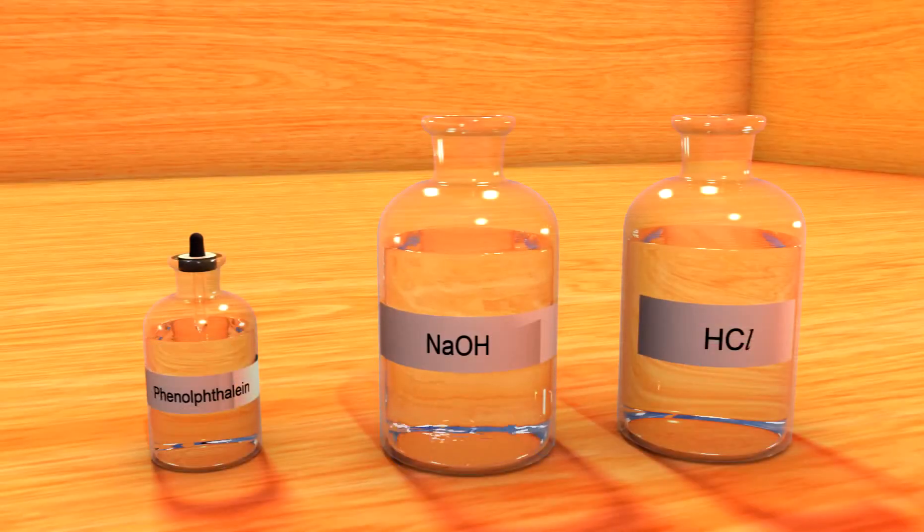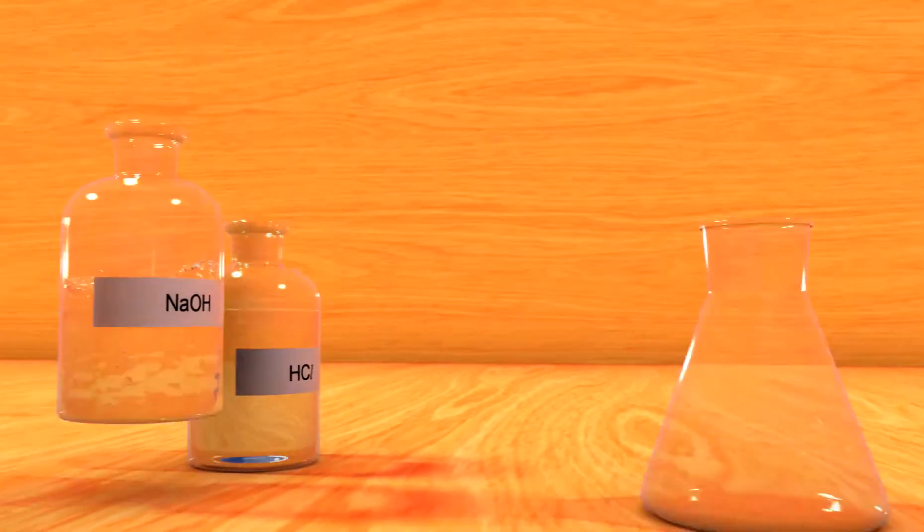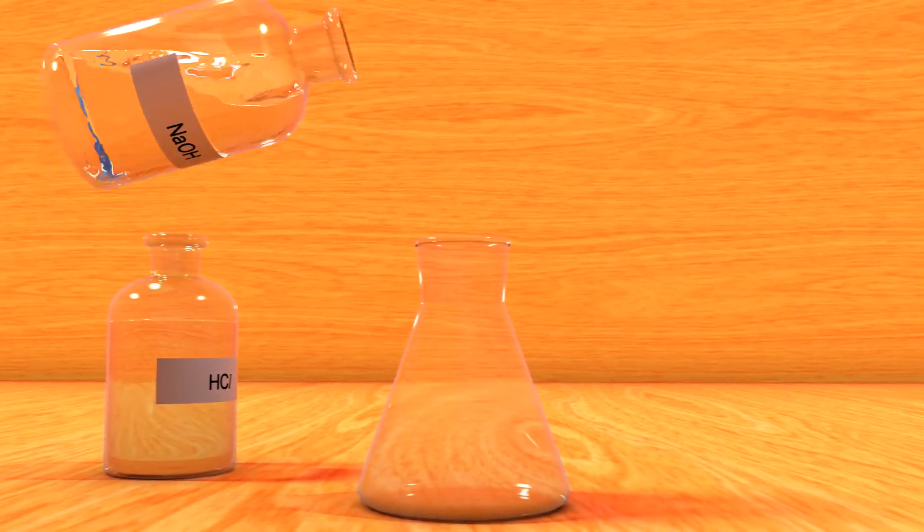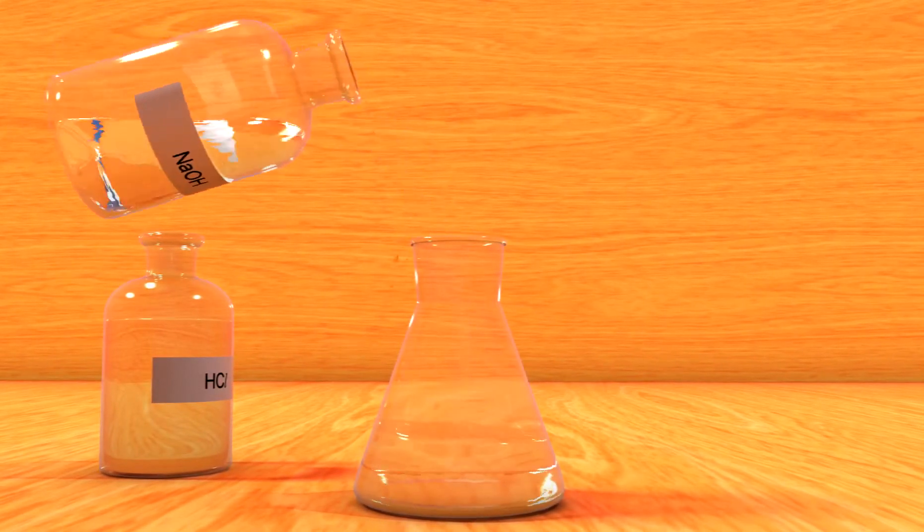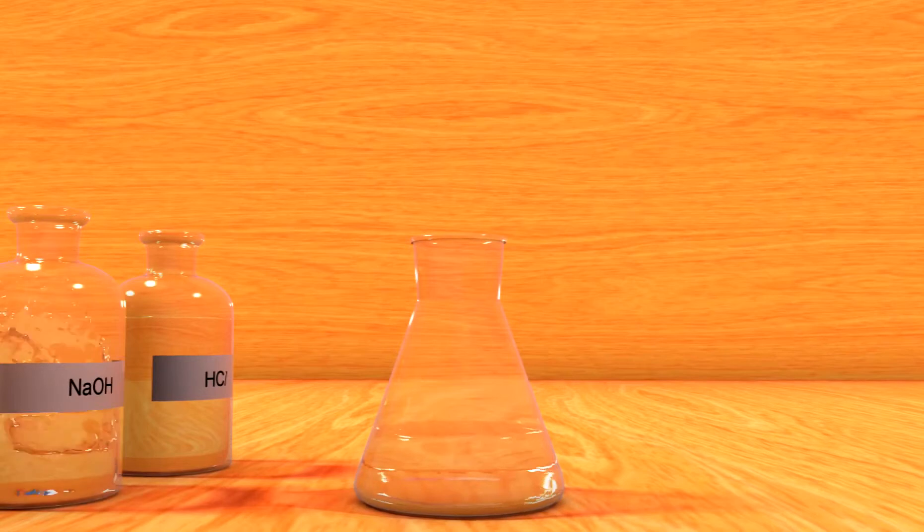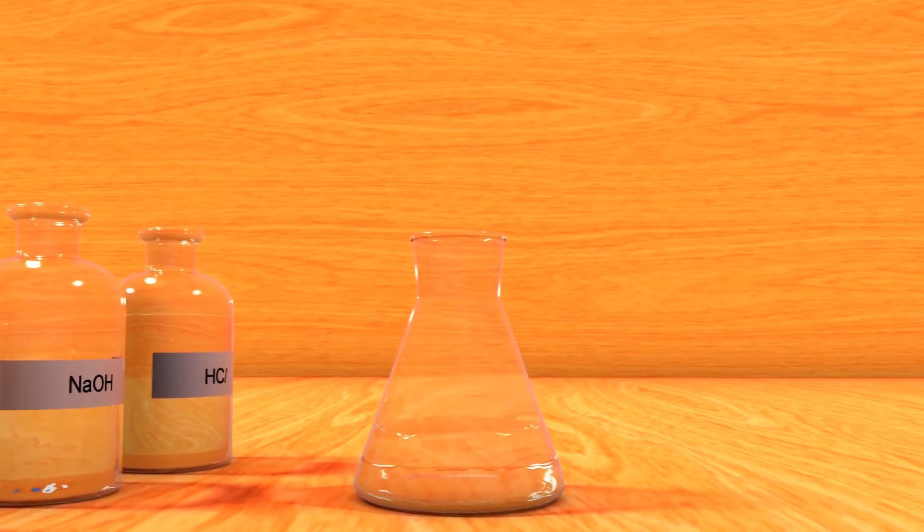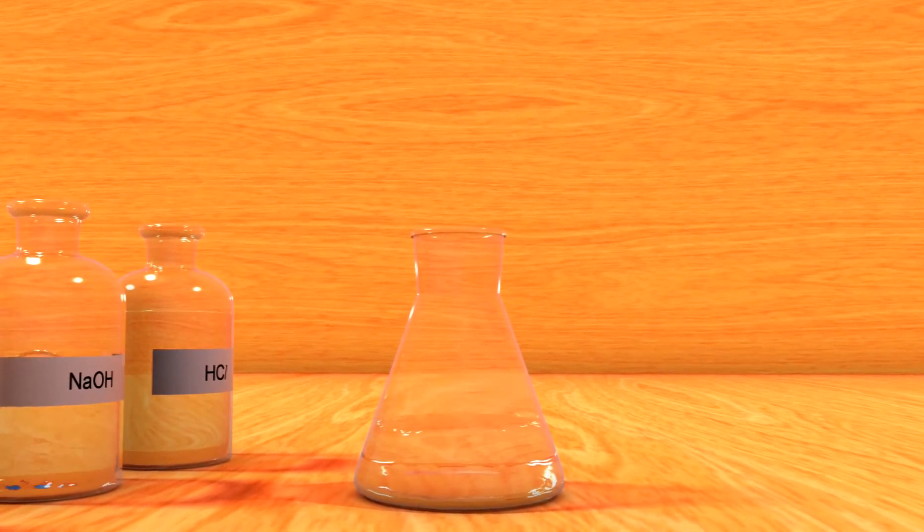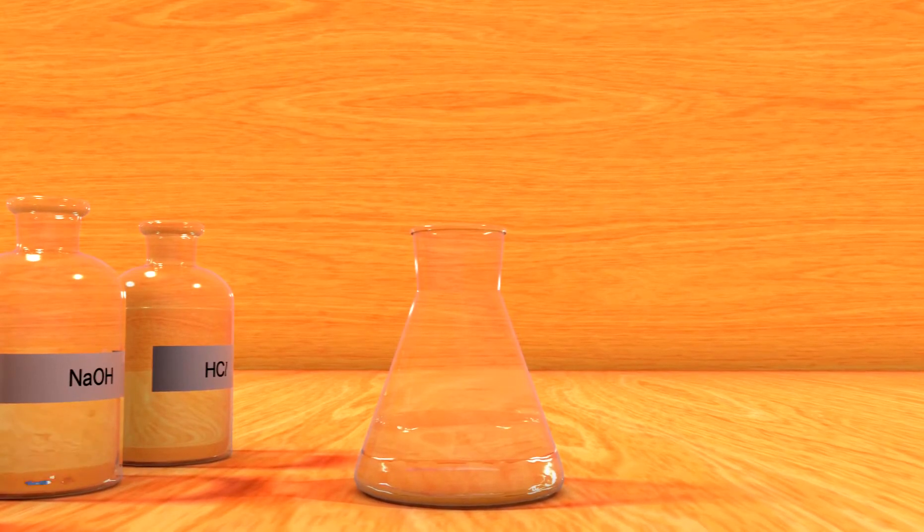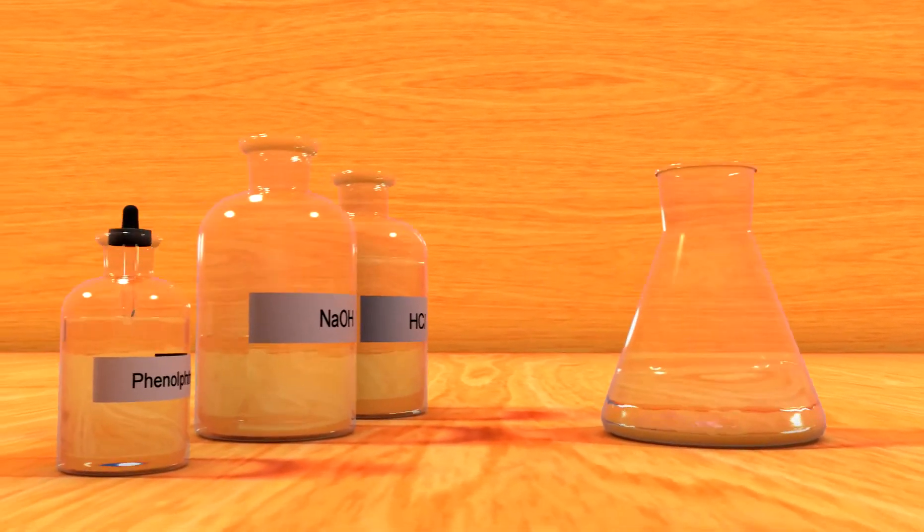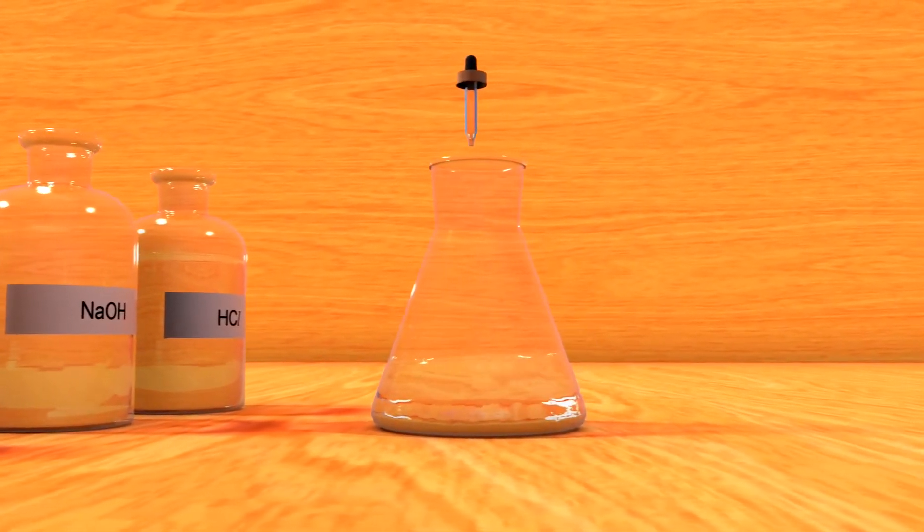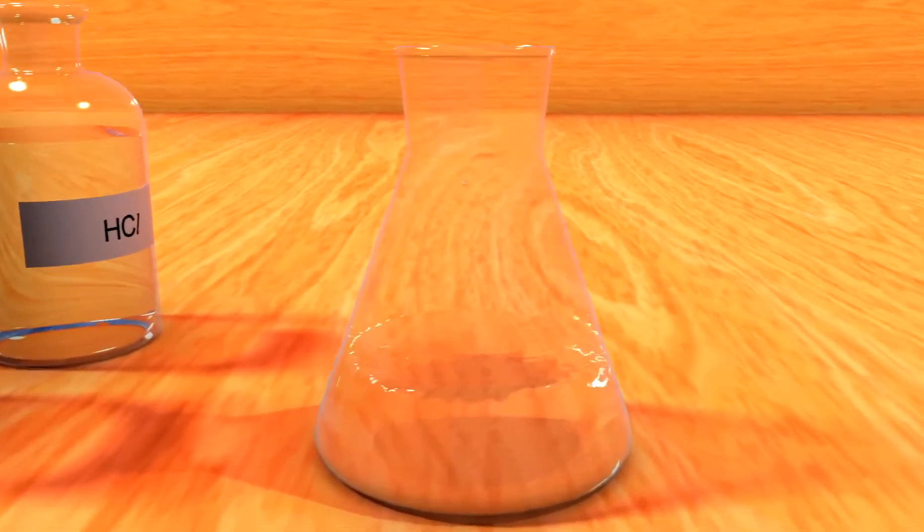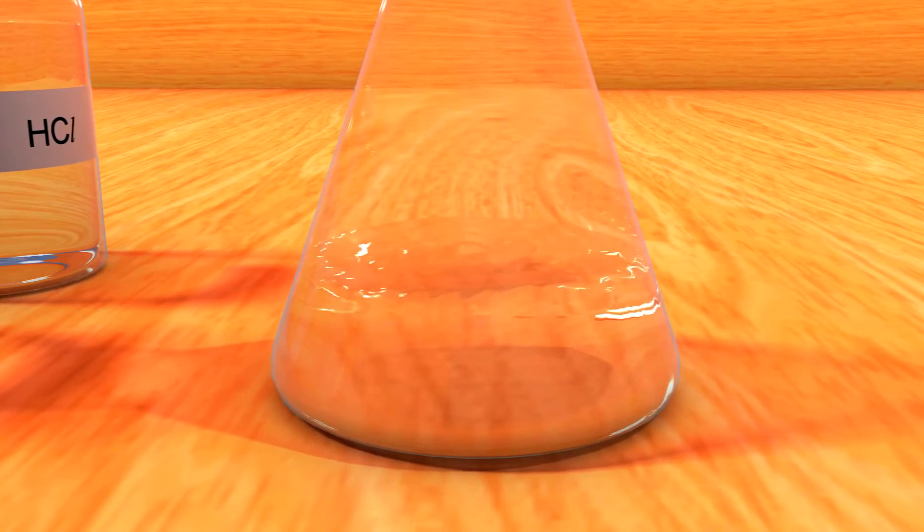Now let's do an experiment. Take a conical flask and pour sodium hydroxide solution. Add a few drops of phenolphthalein. What happens? It turns into pink color solution.